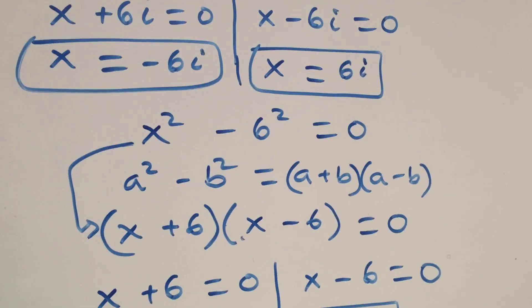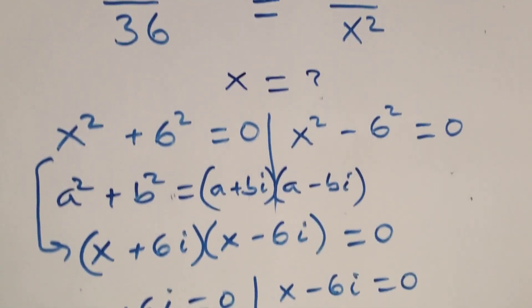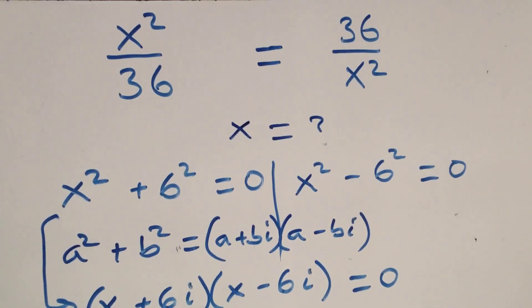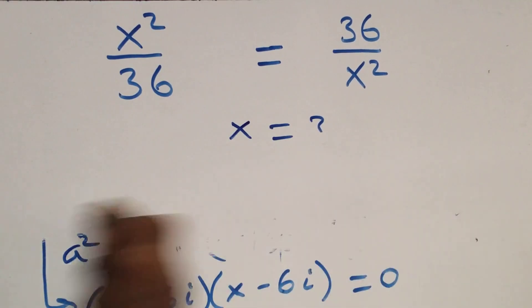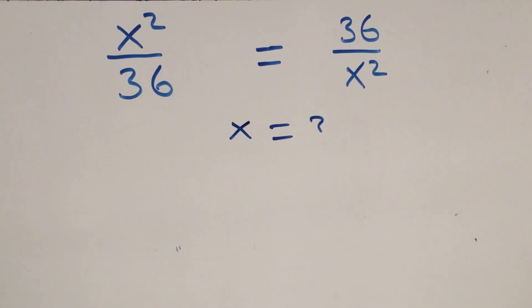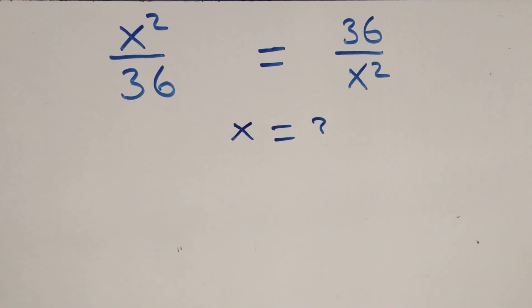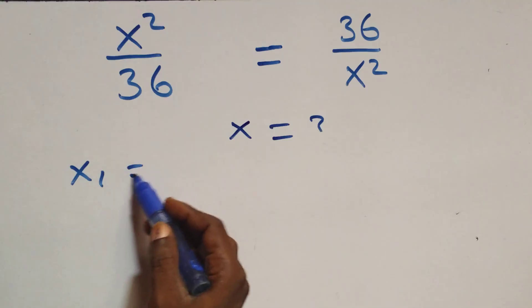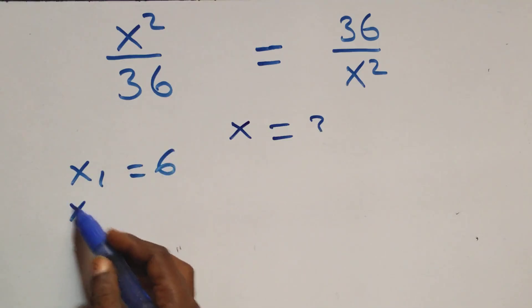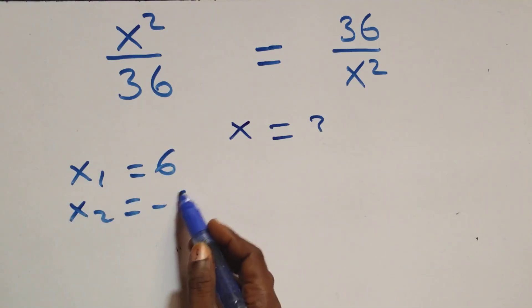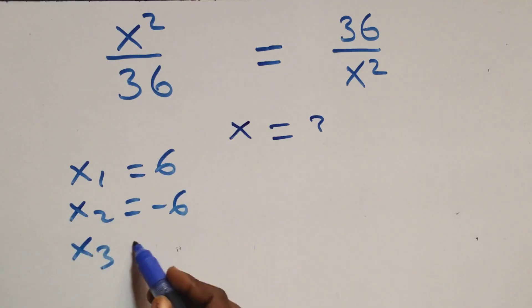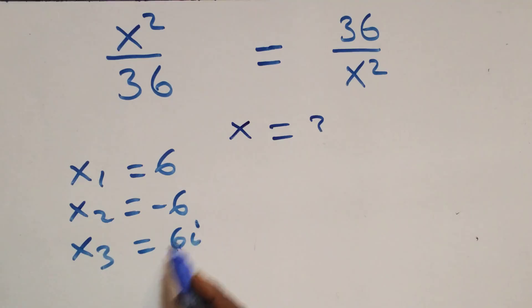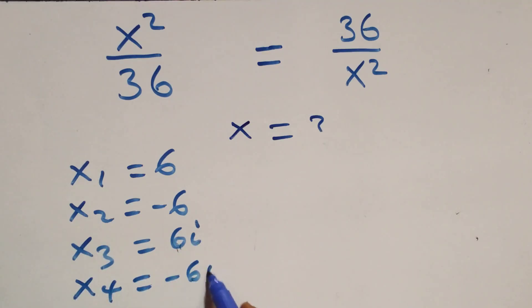Altogether we have four solutions — two real and two complex. Writing them out: x₁ = 6, x₂ = −6, x₃ = 6i, and x₄ = −6i.